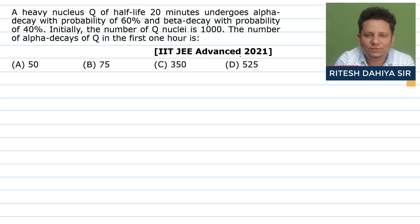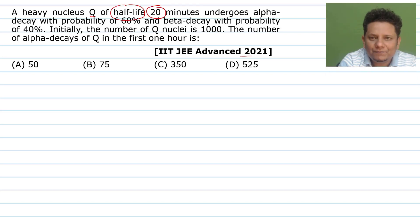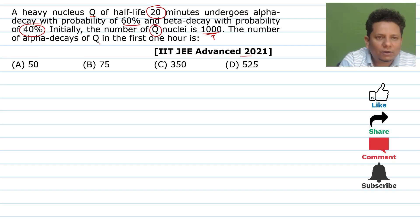All right, this is a question from IIT JEE Advanced 2021. The question says a heavy nucleus Q of half-life 20 minutes undergoes alpha decay with probability of 60% and beta decay with probability of 40%. Initially, the Q nuclei is 1000. We have 1000 nucleus when we started observing at T equals 0.